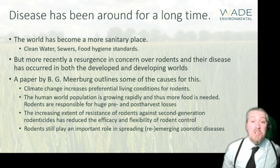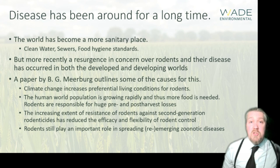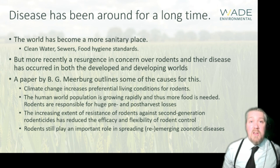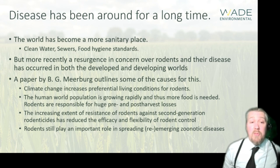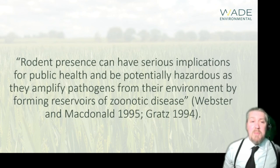A paper by Merberg outlined several causes for this resurgence: a changing climate can increase preferential living conditions for rodents; the world's human population is growing rapidly, requiring more food, and rodents are responsible for huge pre- and post-harvest losses through direct consumption and contamination; there is increased resistance to rodenticides, reducing the efficacy of many rodent control programs; and rodents still play an important role in spreading emerging and re-emerging zoonotic diseases. Rodent presence can have serious public health implications as they amplify pathogens by forming reservoirs of zoonotic disease.